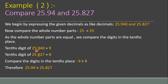I have underlined the tenths digits. The tenths digit of 25.940 is 9, and the tenths digit of 25.827 is 8. Comparing these two digits: 9 is greater than 8, so stop your calculation here. Therefore, 25.940 is greater than 25.827.